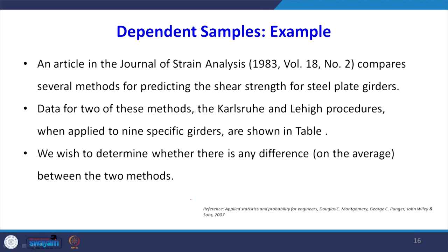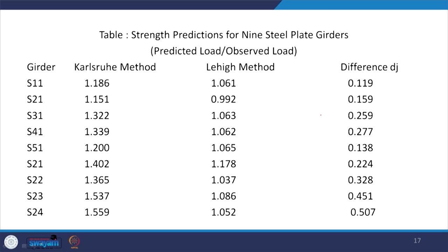We will take one example for dependent samples. An article in the Journal of Strain Analysis, volume 18, number 22, compares several methods of predicting the shear strength of steel plate girders. Data for two methods — the Karlsruhi procedure and the Lehigh procedure — applied to nine specific girders are shown in the table. These two methods are different ways of measuring shear strength. We want to determine whether there is any difference on average between the two methods. Differences are computed; some may be positive, some negative.